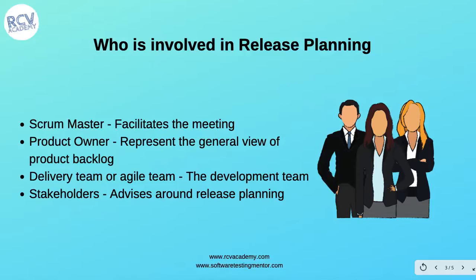Now, who is involved in release planning? The Scrum Master facilitates the release planning meeting. The Product Owner is the representative and represents the general view of the product backlog. The delivery or development team is also involved, along with stakeholders who advise around the release plan. The development team provides their input and feedback, clarifies doubts, and stakeholders advise on the whole release planning.